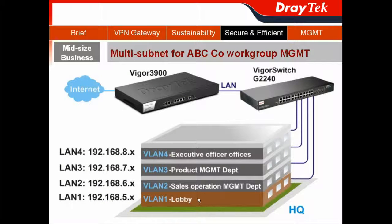In the ABC Company scenario, we can separate the 4-level buildings by different LANs with different VLAN IDs. I will now show you the configuration.